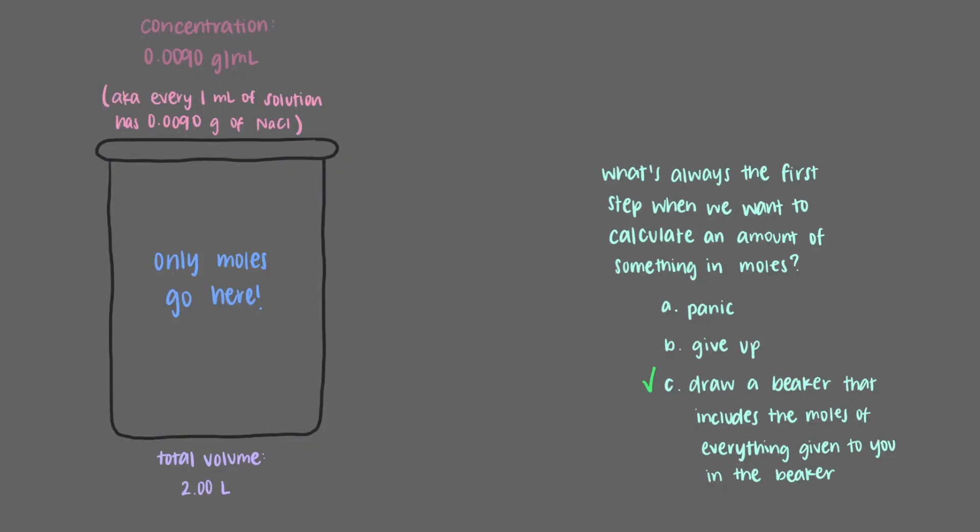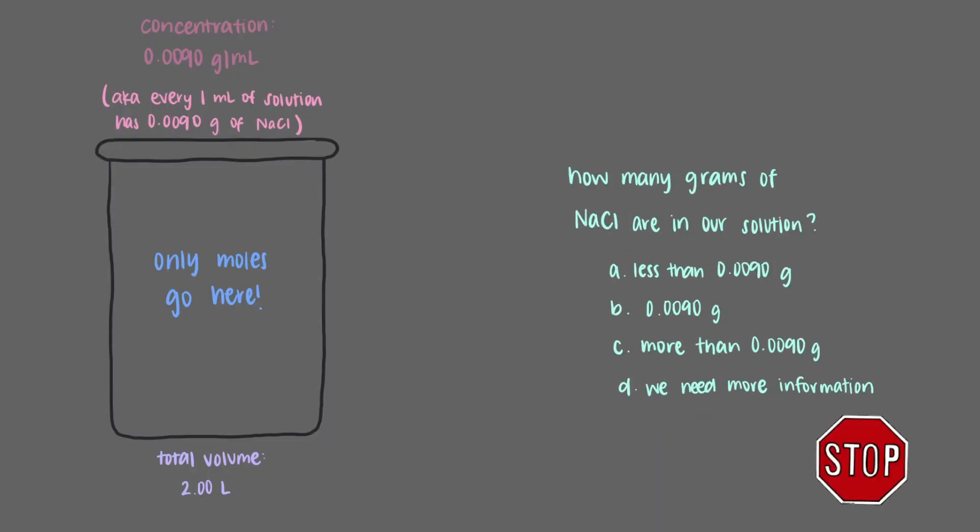That means that every 1 milliliter of the solution has 0.0090 grams of sodium chloride. How many grams of sodium chloride are in our solution? We know that each milliliter of our solution has 0.0090 grams of sodium chloride, but we don't have only one milliliter. We have two liters of the solution. Because our concentration is given in terms of milliliters, we'll convert two liters into milliliters to get 2,000 milliliters to make all of our units uniform.